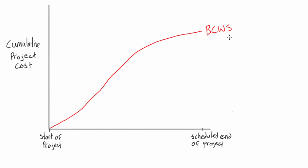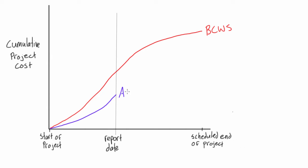From the last video we were talking about report dates, where we had the budgeted cost of work performed and the actual cost of work performed. Let's say we have some arbitrary point along our project as a report date. Not only do we have BCWS, but we'll have the actual cost of work performed — it might not always be exactly what we had planned. We also get one other value from our field reports: the budgeted cost of work performed.